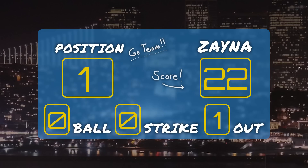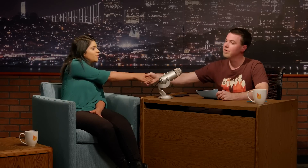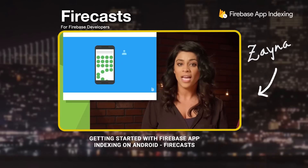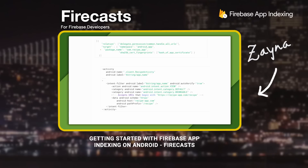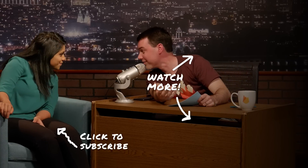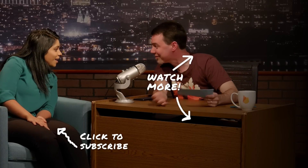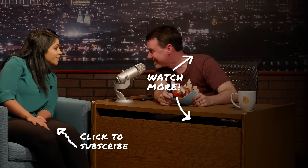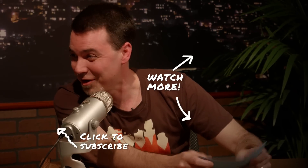Zaina, let's take a look at your final score up on the board. Not bad — pretty good. Thanks for playing, Zaina. Thank you. Good to have you on the show. Thank you so much. And for those of you who haven't seen App Indexing yet, go check out the SDK — the links are in the description below. That's all we have time for. See you next time on another Meet Firebase. Thank you so much for watching. We'll see you next time. Bye.